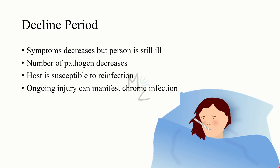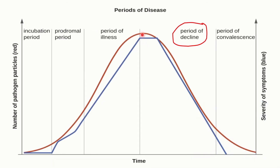Next is the decline period. In some places this is not mentioned separately — it is included in the convalescence period. Symptoms decrease but the person is still ill; they start to feel better but are not yet well. The number of pathogens starts to decrease, and the host is susceptible to reinfection at this stage because the pathogen is still present inside the body. The ongoing injury can also manifest as chronic infection.